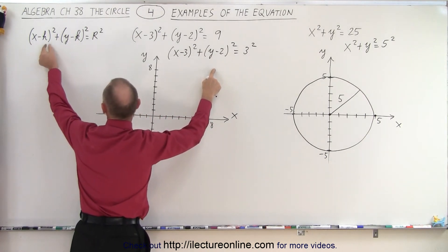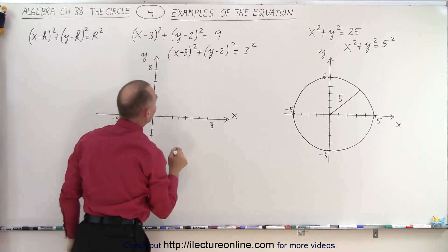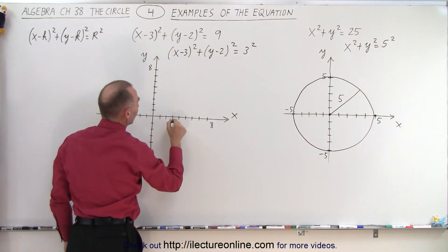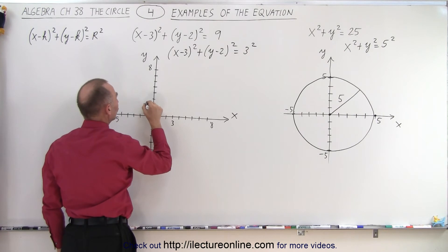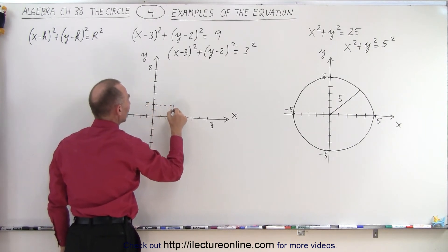the value for h and k are indeed positive. So h is 3 and k is equal to 2. So where those two come together, that will be the center of the circle.